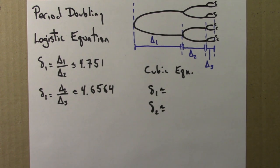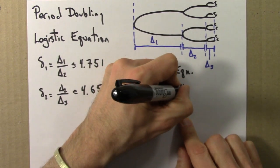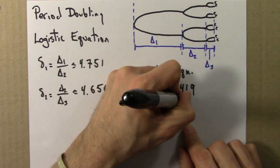In the quiz that you just did, you did the same thing for the cubic equation, and you found 4.419 and 4.618.